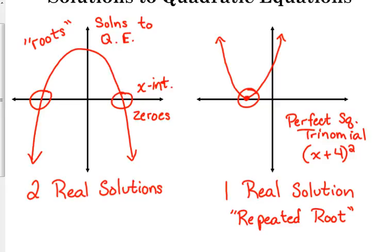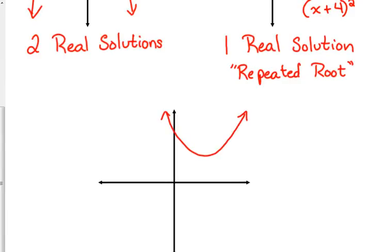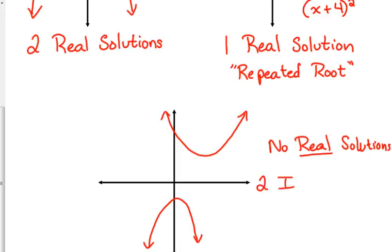And then the third possibility, okay, two real solutions, one real solution. And the third possibility is that we have no real solutions. It is possible that these parabolas may not cross the x-axis at all. So we could have a parabola that looks like this. It never touches the x-axis. We could have one down here. It crosses the y-axis, but it does not cross the x-axis. So this is the case where we have no real solutions.